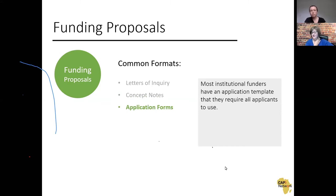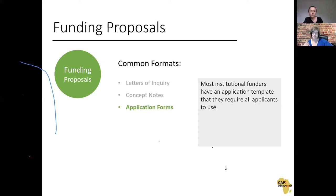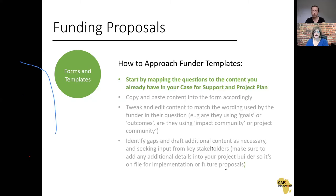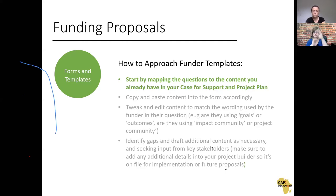Most funders that are funding at larger budget amounts or institutional funders have their own application template that they require all applicants to use. This is definitely the case with any government funders, and generally speaking, anybody that is a granting body is going to have a standard template that you need to fill out. The most common format you will encounter is translating your case for support and project plan into the format for each individual funder — and each funder is going to structure things differently and ask questions with different space constraints.